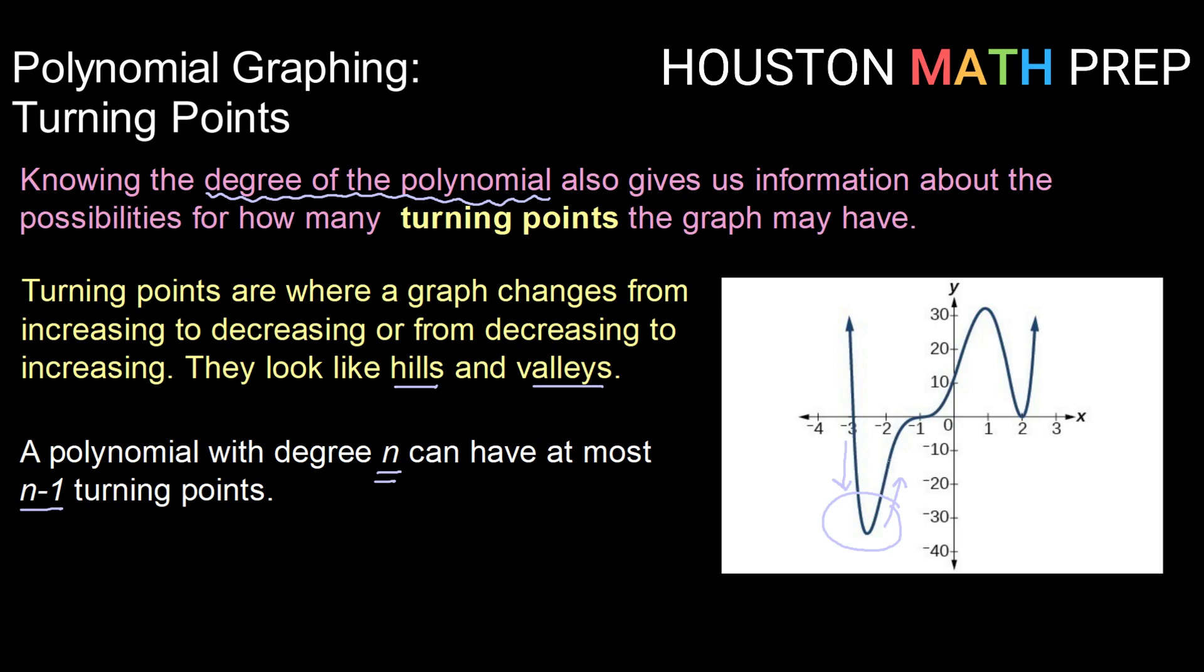Following still from left to right I continue increasing until I get up to the top of this hill here. Here I change from increasing to decreasing so I get a turning point at x equals 1. And finally, continuing to follow, I get a change from decreasing to increasing right here at x equals 2 to find my third and final turning point.